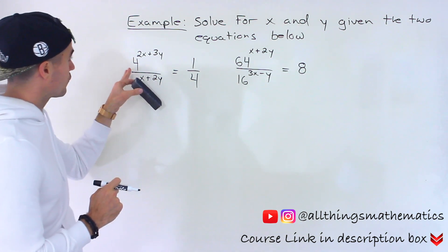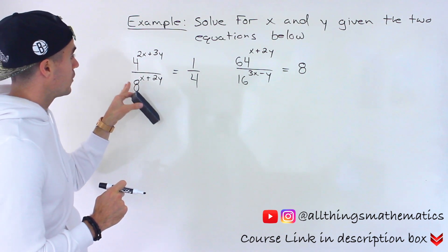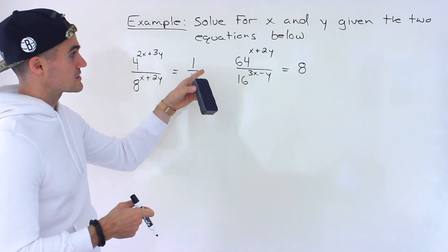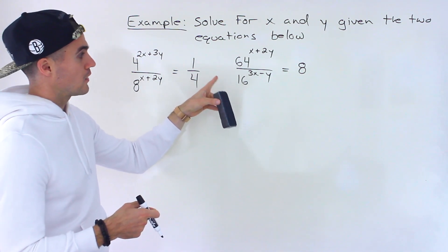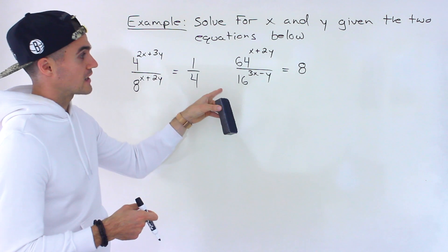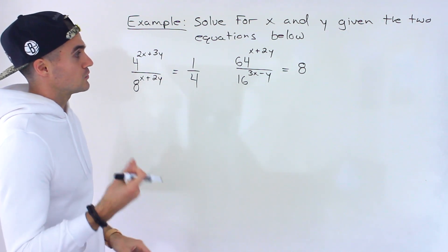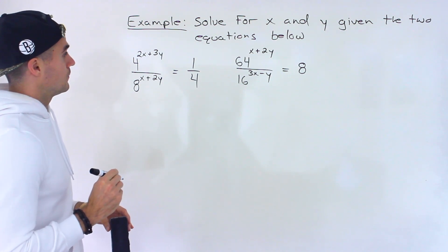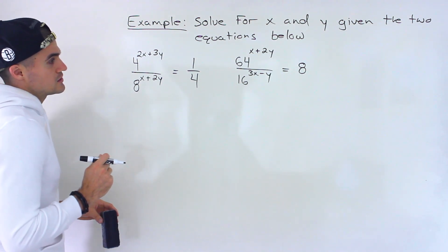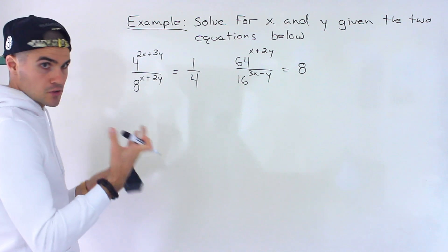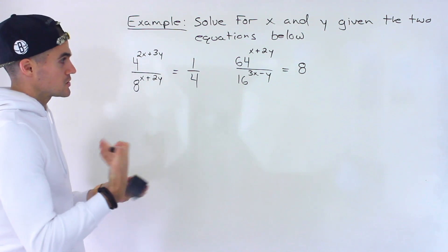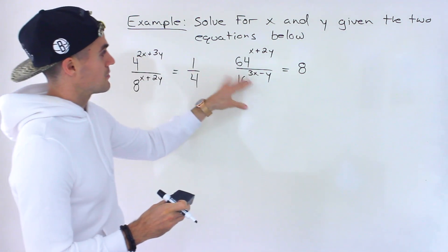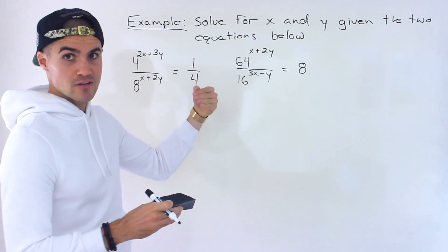Starting with the first equation, we have 4 to the power of (2x + 3y) over 8 to the power of (x + 2y) equals 1/4, and then 64 to the power of (x + 2y) over 16 to the power of (3x - y) equals 8. What we want to do is make equations in terms of x and y where we can do substitution or elimination, and the way to do that is by changing all these expressions to have the same base.